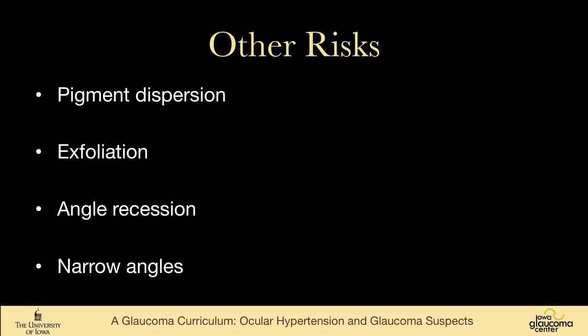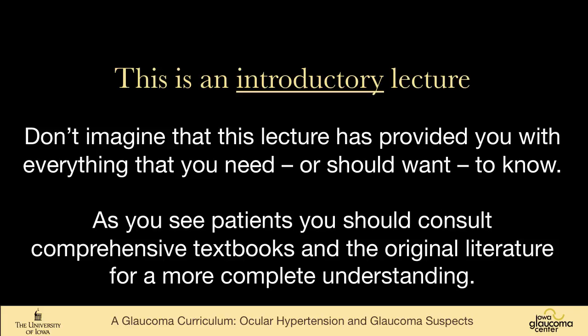So family history — what does one do if a patient has a family history? You would want to alert whoever is doing their eye care that there's a family history of glaucoma, so hopefully they pay more attention to the optic nerve. If I see somebody in my clinic who is a relative of a patient I'm caring for, I will often get disc photos because 15 or 20 years from now that could be critical. There are certainly other things that put people at risk for glaucoma — subjects of other talks — including pigment dispersion, exfoliation, angle recession, and narrow angles. So just an overview of people who are at risk for glaucoma but don't have glaucoma, and an approach to how to think of them.